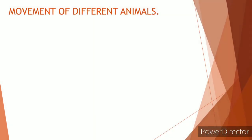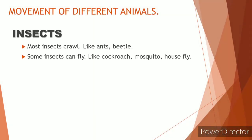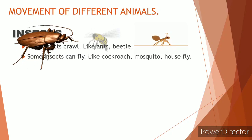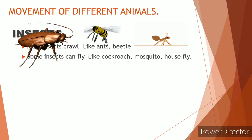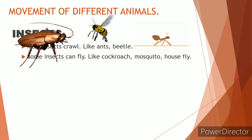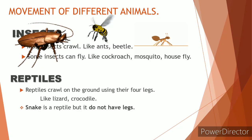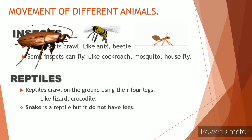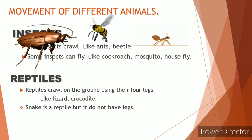First, insects — they mainly crawl and fly. Ants and beetles do not have wings, they crawl on the ground. Cockroach, mosquito, and housefly — they can walk, crawl, or fly.